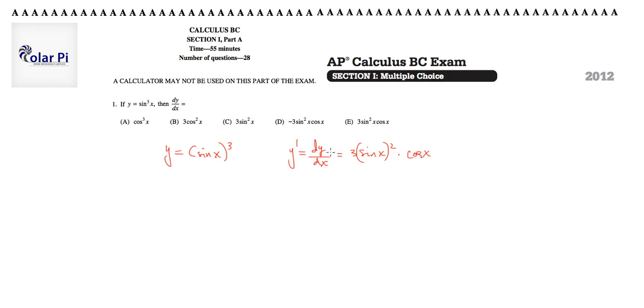We view this as a composition of x³ and sine x. In that composition, sine x is the inner function, so we do the derivative of the outer function without changing the inner function. That's 3(sine x)², where 3x² is the derivative of x³.